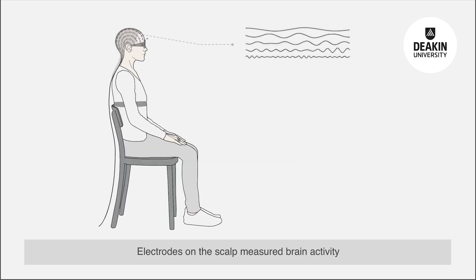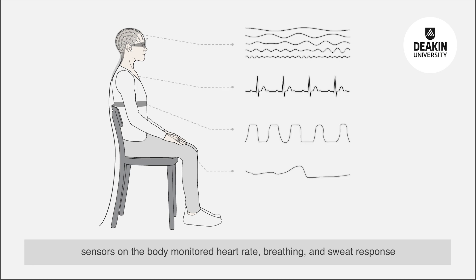Electrodes on the scalp measured brain activity, sensors on the body monitored heart rate, breathing and sweat response, while we also asked participants to report their emotions.